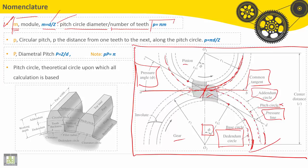P is equal to pi into M, the module. What is P? P is the distance from one tooth to the next tooth.